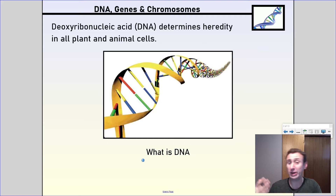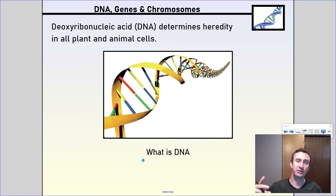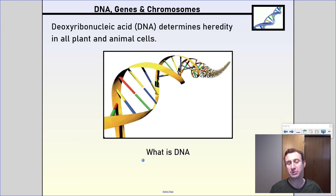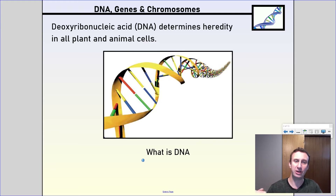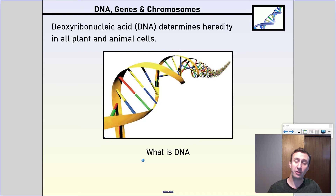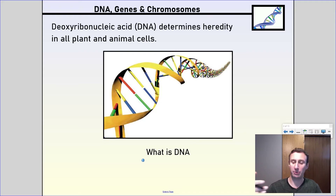So first of all, what is DNA? DNA is actually a shorthand for deoxyribonucleic acid, and it's the way that heredity happens in all plant and animal cells. Remember that heredity is the passing on of traits from one generation to the next.